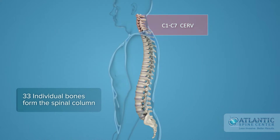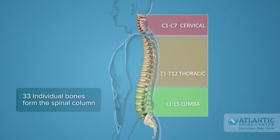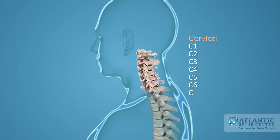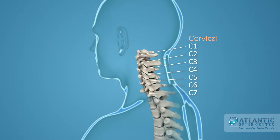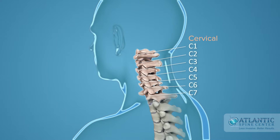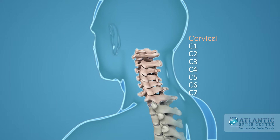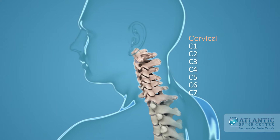The vertebrae are numbered and divided into regions. C1 through C7, the cervical vertebrae, form your neck, support your head and neck, and allow you to nod and shake your head.